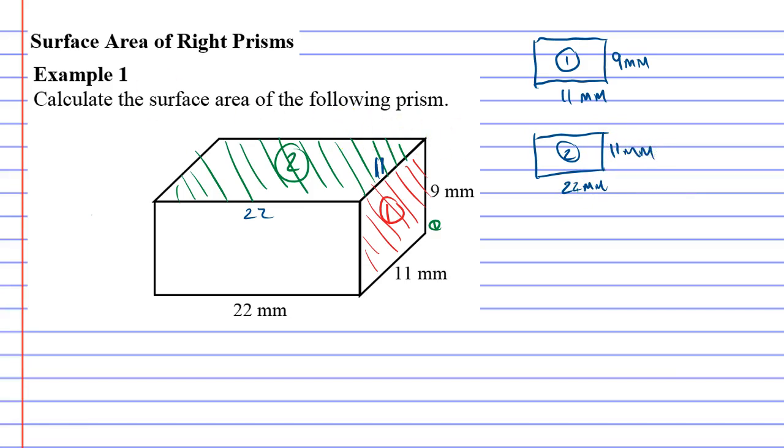The third rectangle we can see is right at the front. Here. And we'll call that shape 3, or rectangle 3. And that one is 22 millimetres, and it's got a 9 millimetre height here. Now, that is three of the rectangles on the shape.